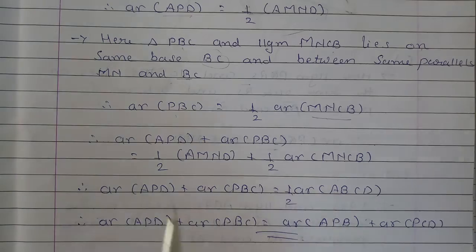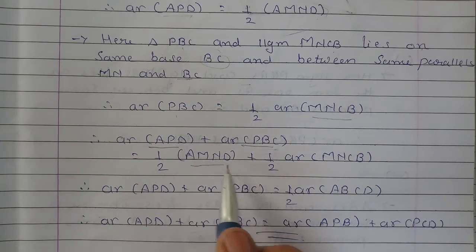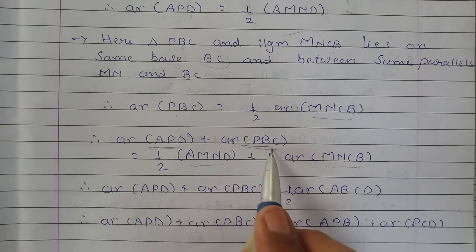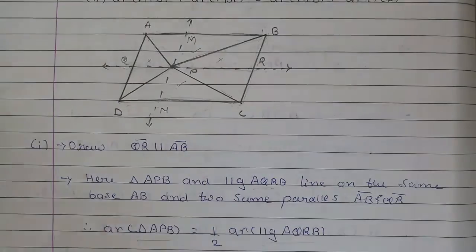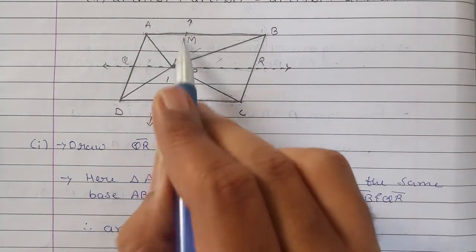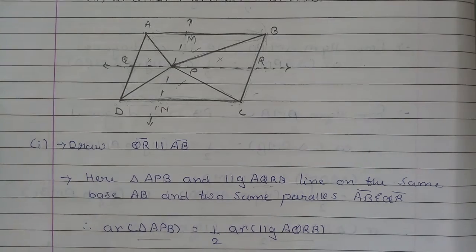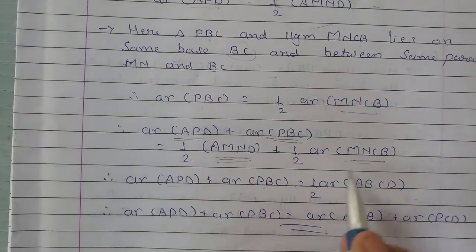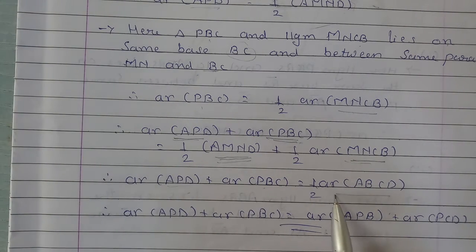Got it? Now, dono ko plus kar do. APD plus PBC will be half AMND plus half MNCB. Ab AMND aur MNCB — ye dono parallelograms ko mila do, matlab poora parallelogram ban gaya ABCD. So, in dono ke plus ki jagah pe hum likh sakte hain ABCD. Done? So, area of APD plus area of PBC will be half the area of ABCD.